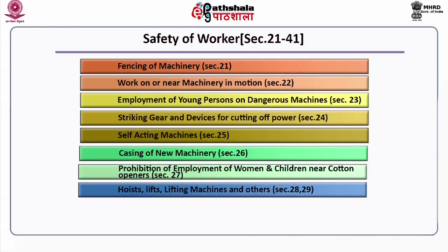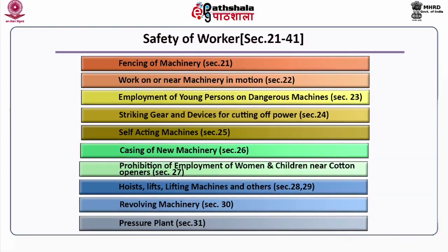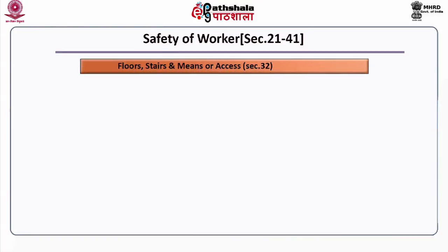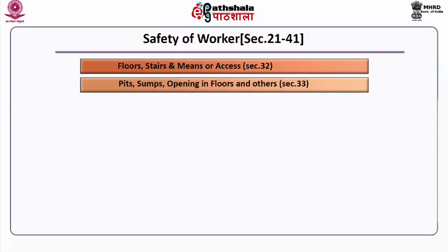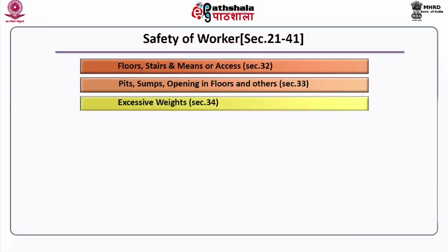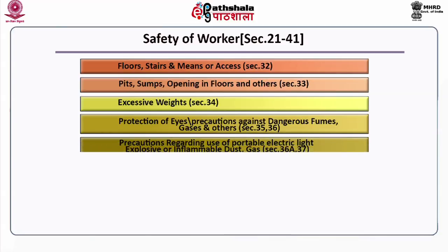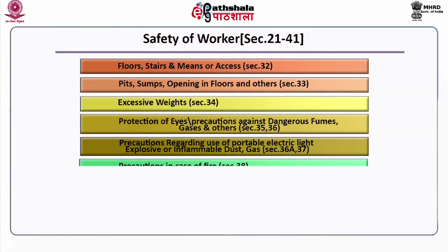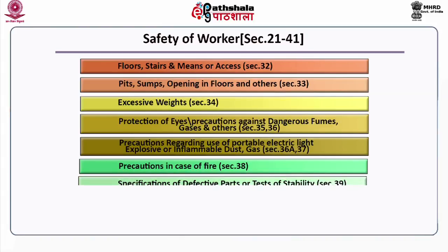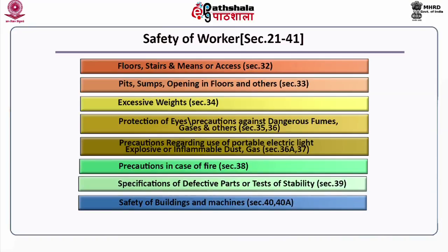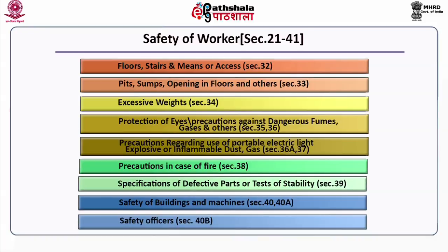Further safety provisions include: Sections 28 and 29 — hoists, lifts, lifting machines and others; Section 30 — revolving machinery; Section 31 — pressure plant; Section 32 — floors, stairs and means of access; Section 33 — pits, sumps and openings in floors; Section 34 — excessive weights; Section 35 — protection of eyes; Sections 35 and 36 — caution against dangerous fumes; Section 36A — precautions regarding use of portable electric light; Section 37 — explosive or inflammable dust and gas; Section 38 — precautions in case of fire; Sections 39, 40, and 40A — specifications of defective parts and safety of buildings and machinery; Section 40B — safety officers.